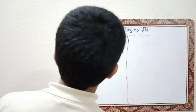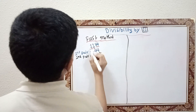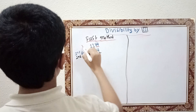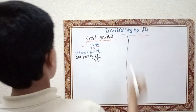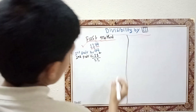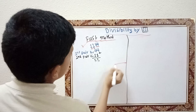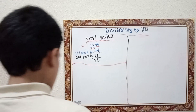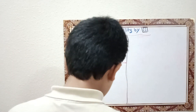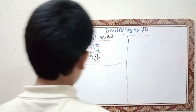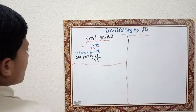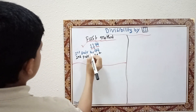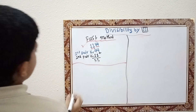Now we'll do summation: 44 plus 11 equals 55. 55 can be divisible by 11 — yes. So the original number 1144 can be divisible by 11. Now we'll take another example using odd digits.